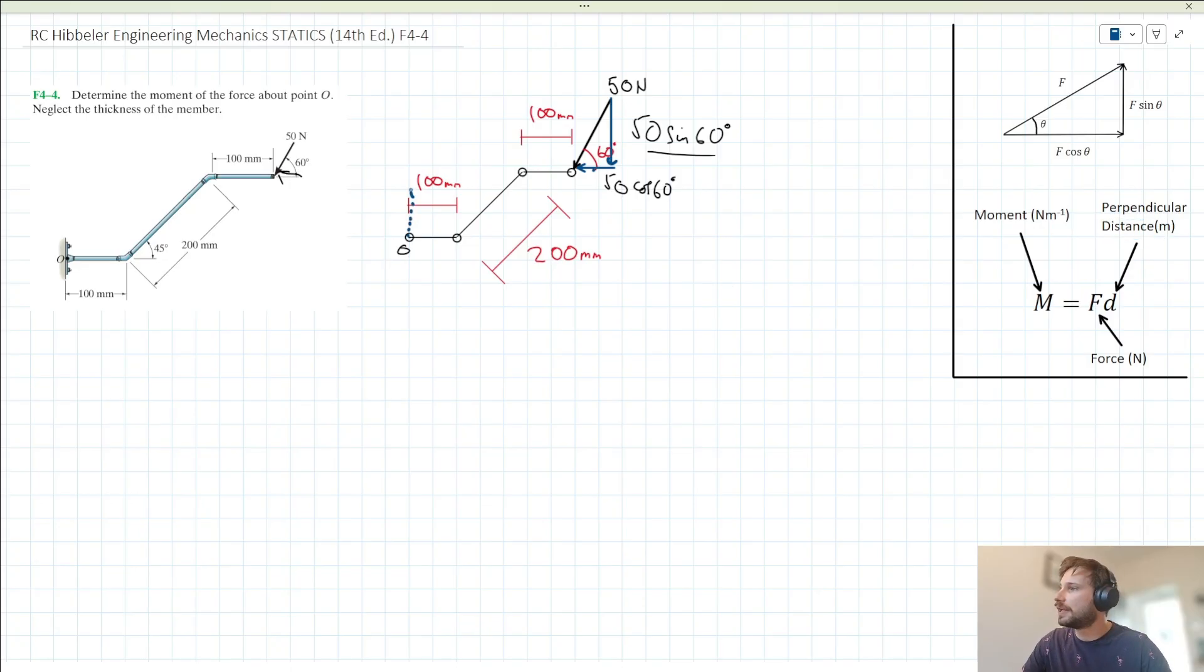We need to find this length, which gives the perpendicular distance for the horizontal component. Let's call it Y because it acts vertically. We also need to find this length for the vertical component, call that X. Let's calculate X. For X, we have 100 millimeters, then the horizontal component of this 200 millimeter length. This section acts 45 degrees to the horizontal, and we have this final 100 millimeters.